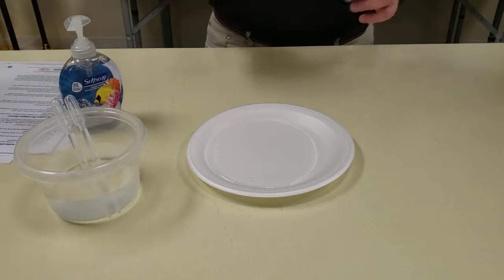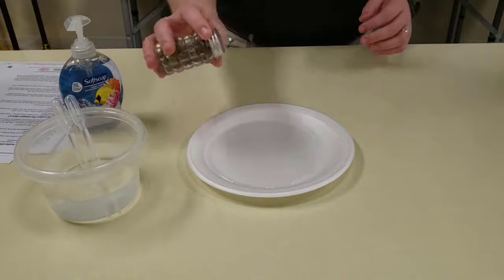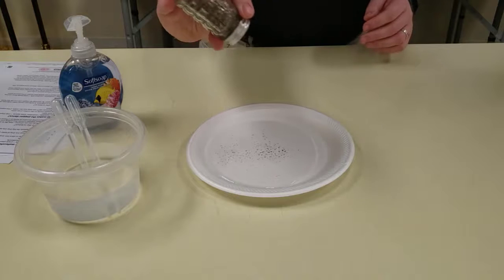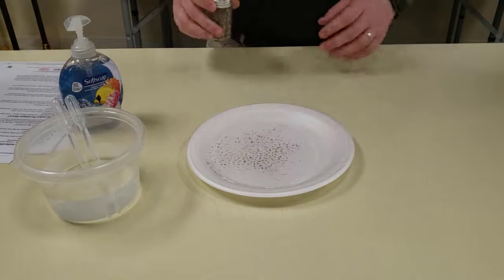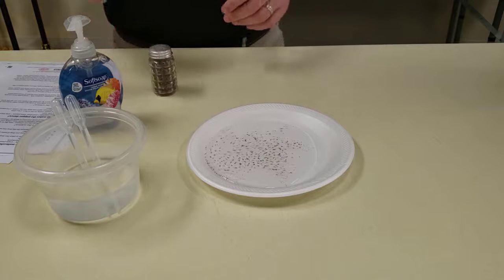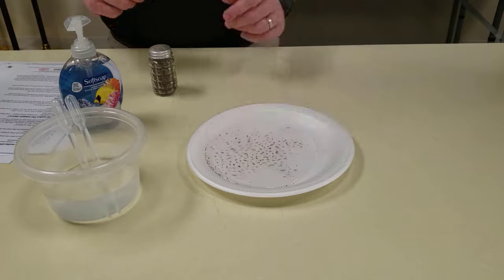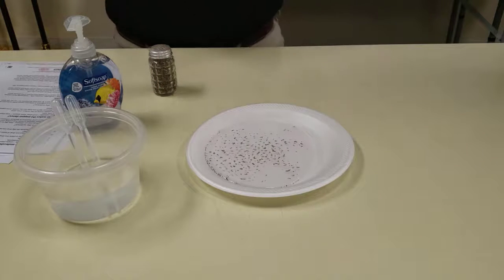So the next thing I want to do is I'm going to take a little bit of pepper and I'm just going to sprinkle it on there. Just get a good coating on the surface so you can see that the pepper is kind of staying all together in one area and see it floating out just a little bit.